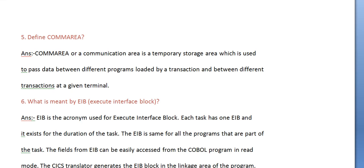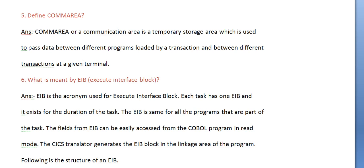Define COM area. COM area or Communication Area is a temporary storage area used to pass data between different programs loaded by a transaction, and between different transactions at a given terminal.